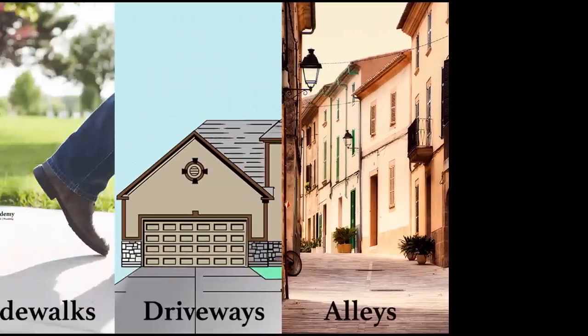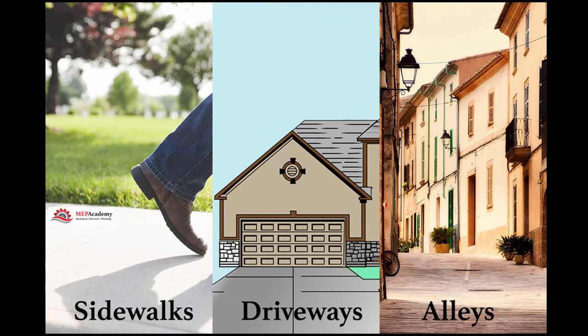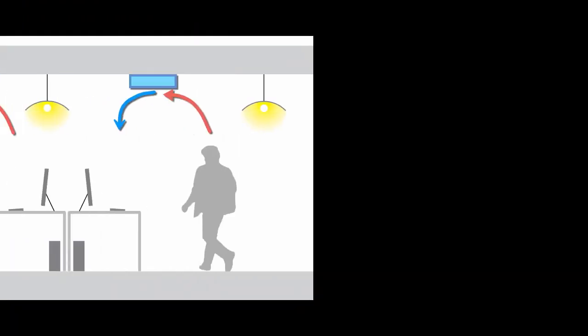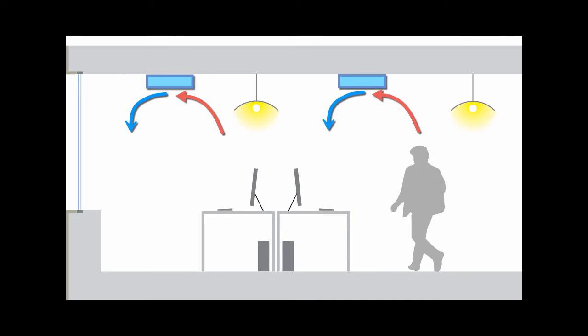Some locations where you cannot terminate condensate include public ways like sidewalks, driveways, and alleys. Excluded from these code requirements are non-condensing types of equipment like radiant cooling panels, which are designed to prevent condensate from occurring by keeping the temperature of the chilled water above the dew point temperature or vapor pressure of the surrounding air. These systems are designed to operate in sensible cooling only modes, so you shouldn't have any condensate — they're excluded.